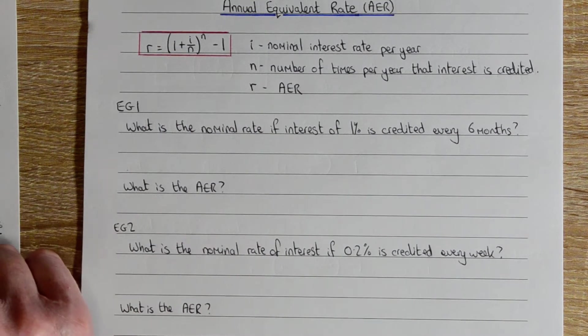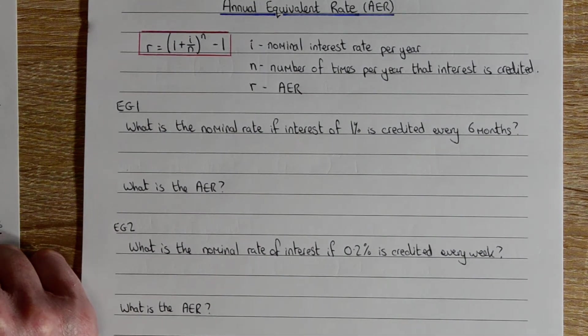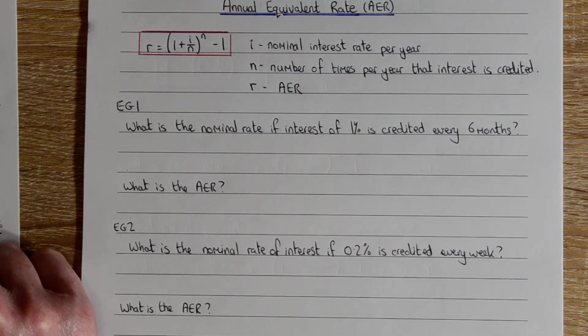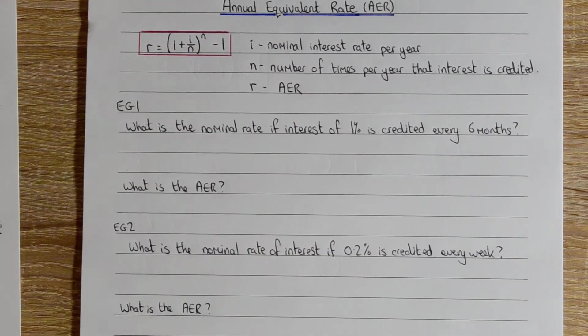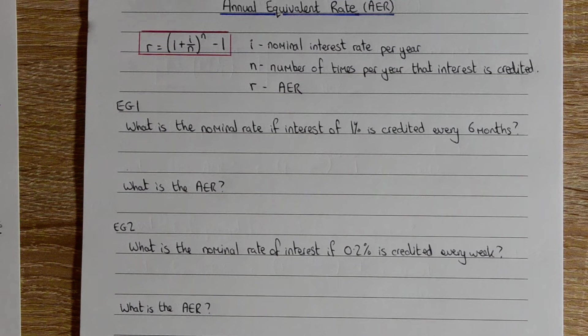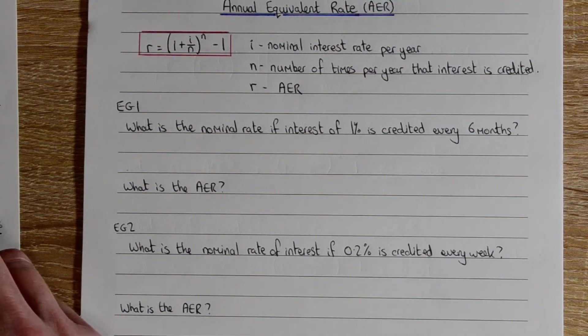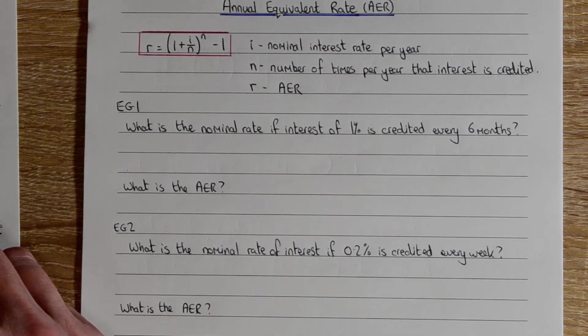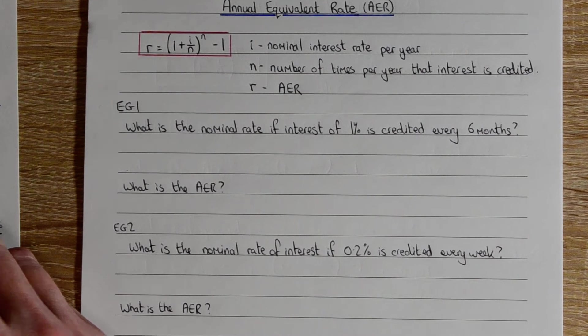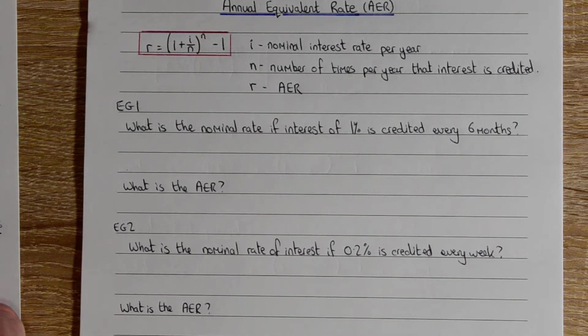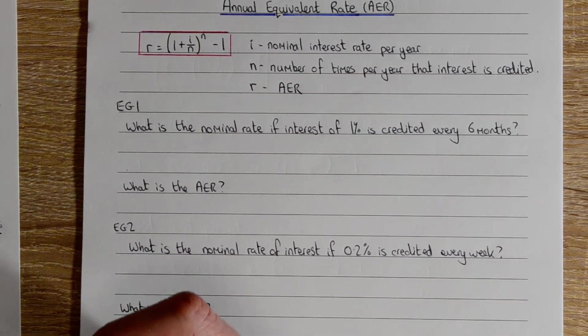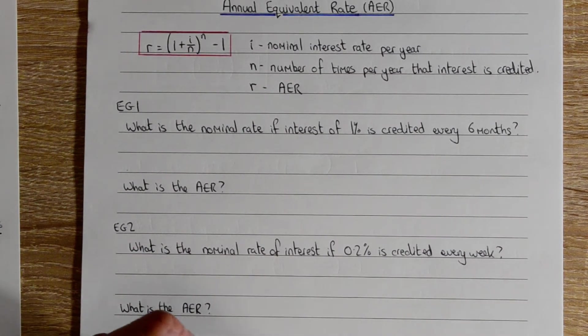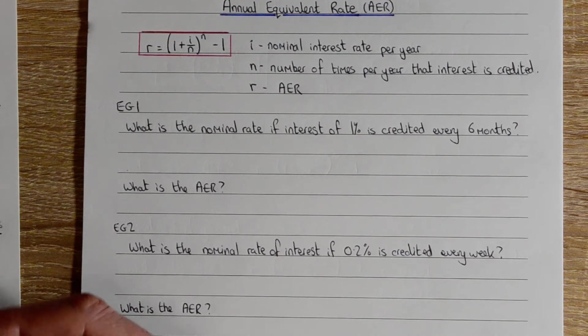First of all, we're going to do an example to find out nominal rate, so that's our letter I in the formula. In our example, we're told that 1% interest is credited every six months. What is the nominal rate? Nominal rate is just how much interest you get if we ignored the amount of interest that you get partway through the year.